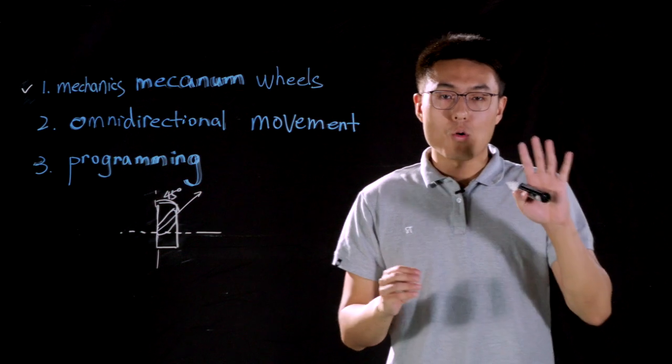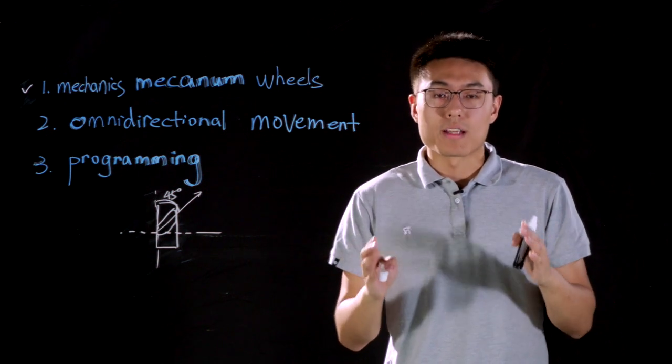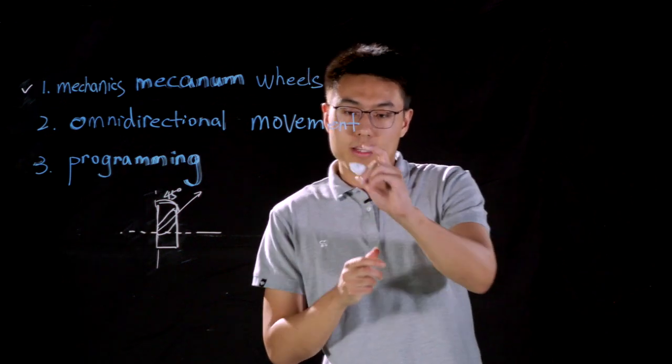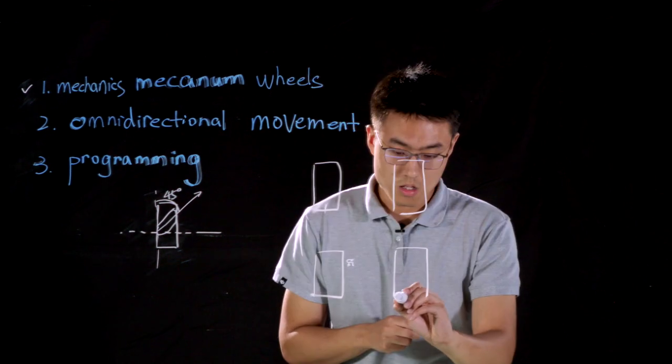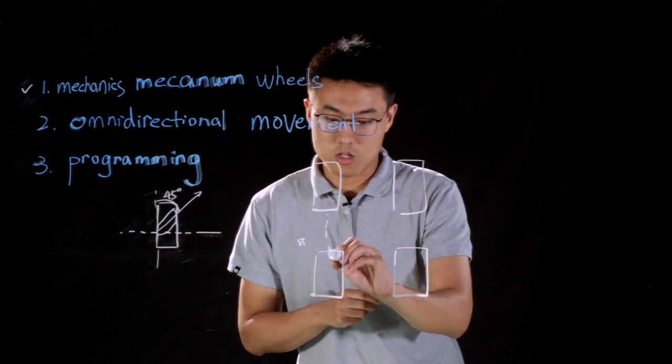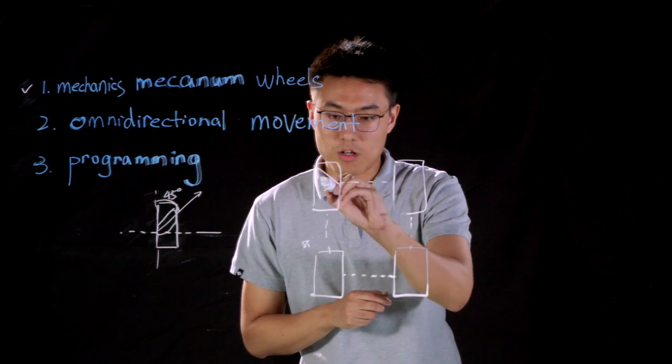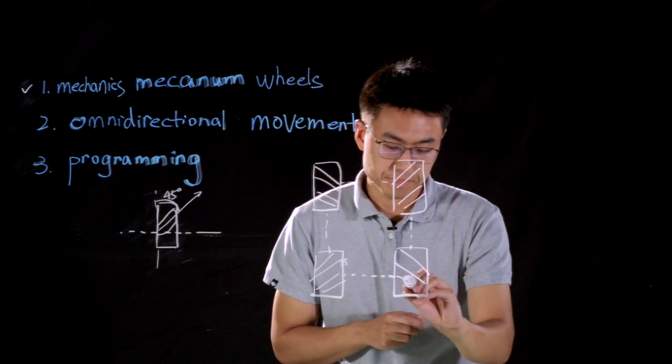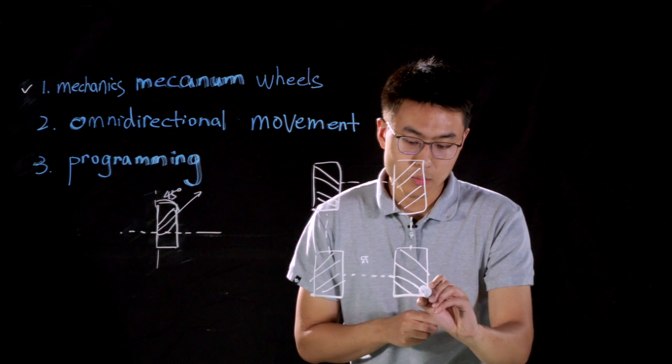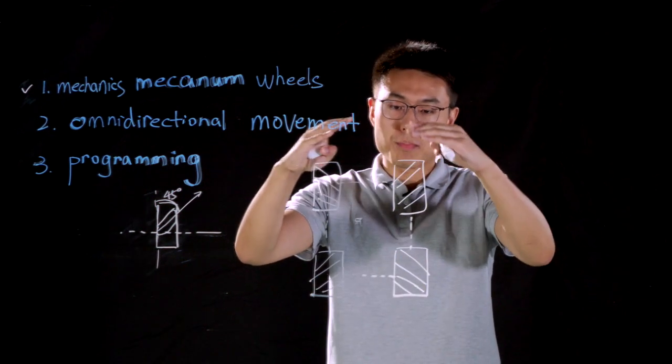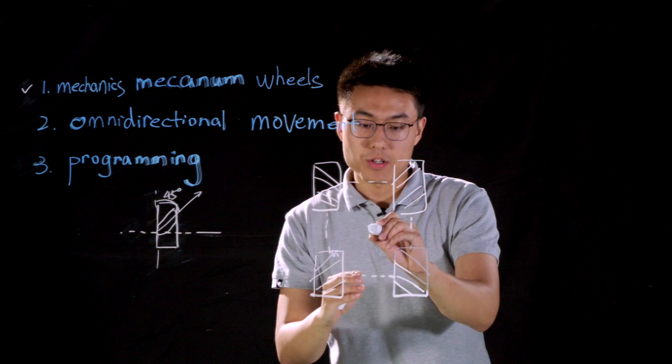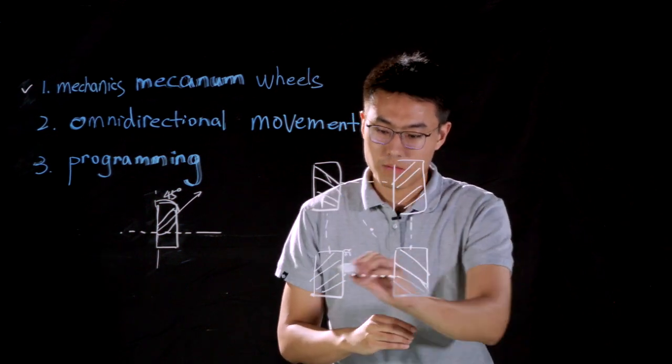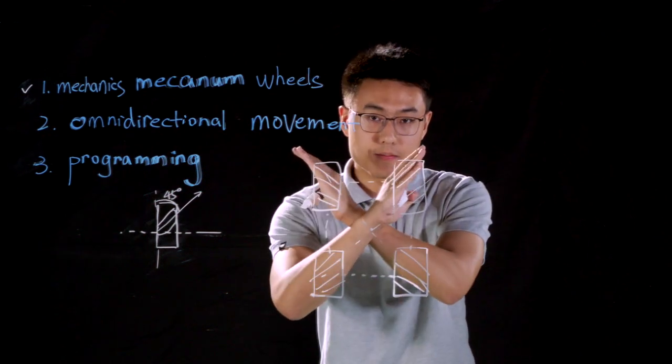RoboMaster S1 has four Mecanum wheels, and they must be installed in a certain way. If we look from the top of S1, we can actually abstract S1 into four wheels and the chassis, and here are the rollers of each wheel. And you may notice that the axis of each roller is pointing to the geometrical center of chassis, and it forms an X after being connected.